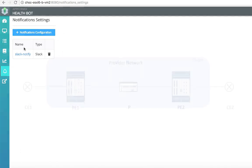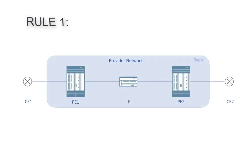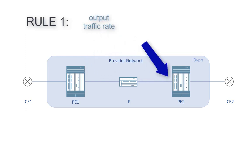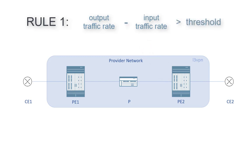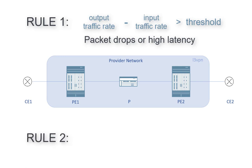The first rule applied as a part of this network playbook checks for the output traffic rate on the outgoing interface of PE1 with the input traffic rate on the incoming interface of PE2, and then compares the difference of the two against an expected threshold. If the difference is higher than the expected threshold, we can infer packet drops or high latency in the network. The second rule checks protocol status on the two endpoints.